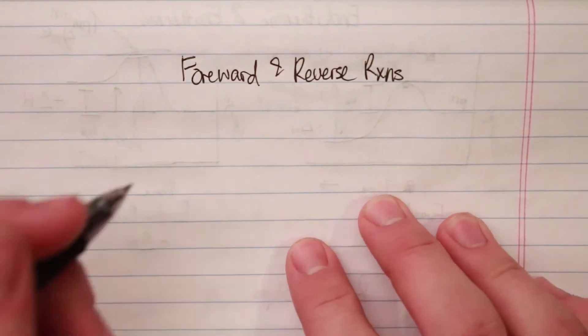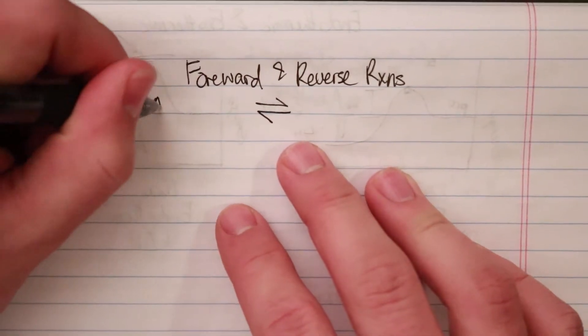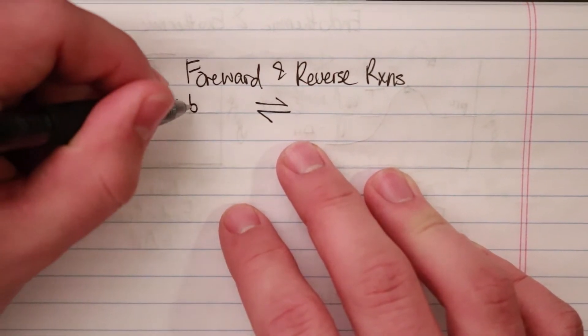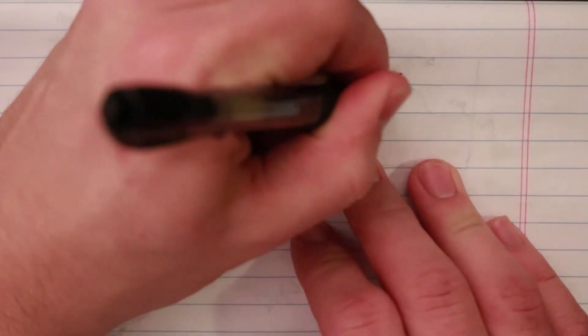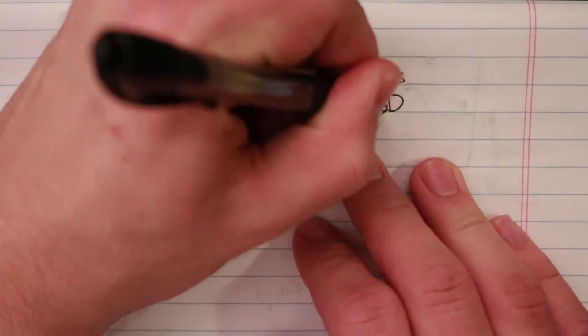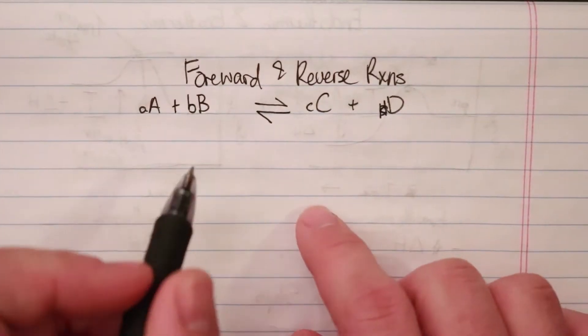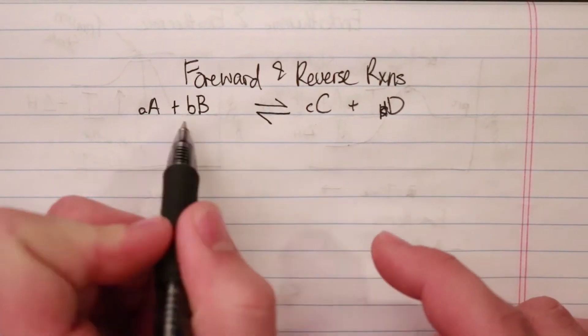All right, so today I want to talk about forward and reverse reactions. I've drawn this arrow, and there's a lot of talking that goes along with this. But basically, the idea is that when we have a chemical reaction, it doesn't just go in one direction. It goes both ways.